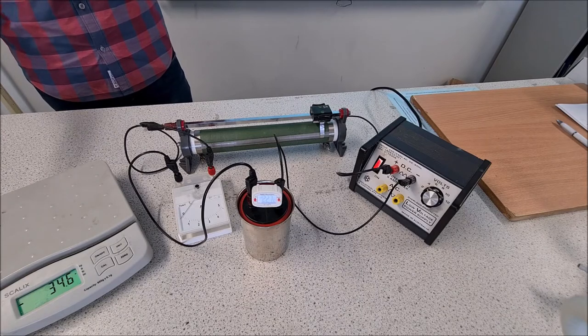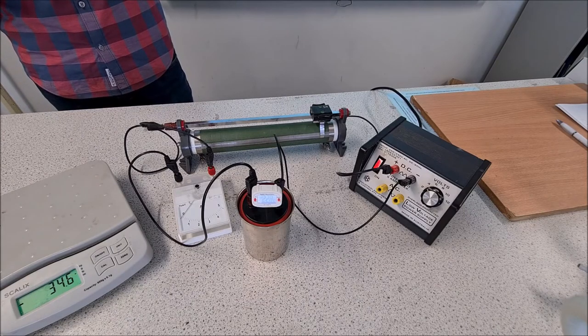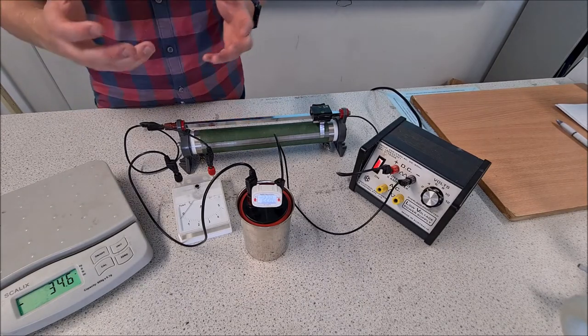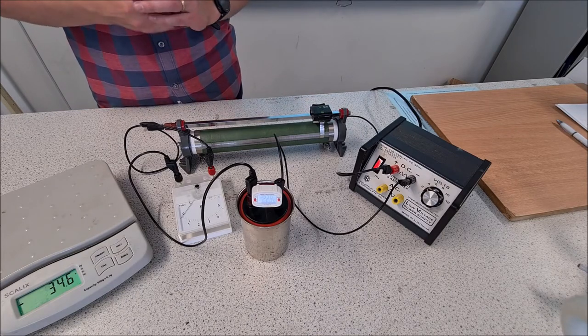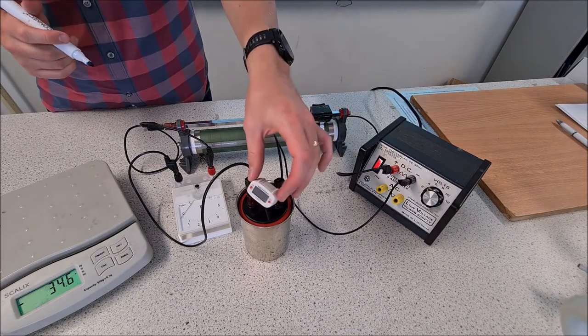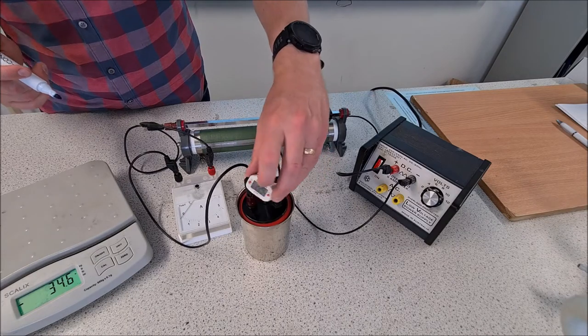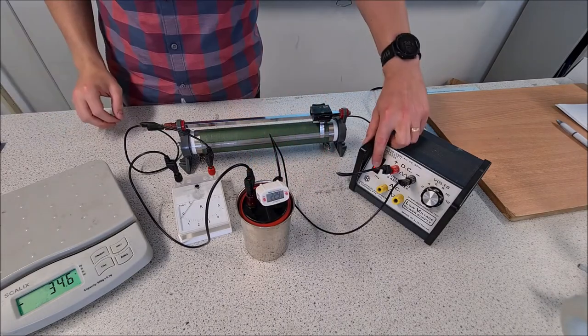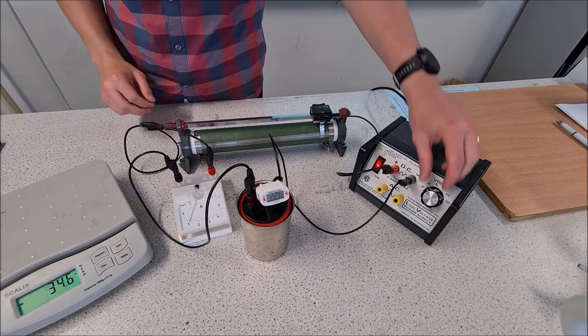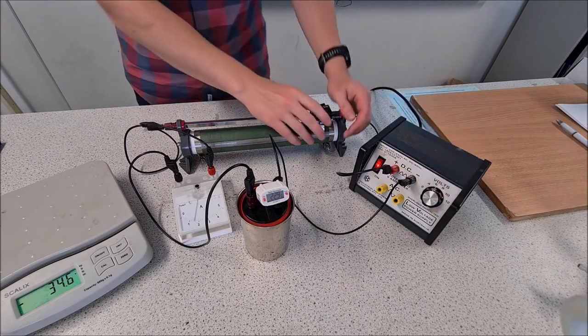The more things you can keep stable, the better. As close to the same starting temperature each time, the better. Okay, so starting temperature is 22.9 degrees this time. Power supply is going on. We're aiming for 1.5 amps here now.